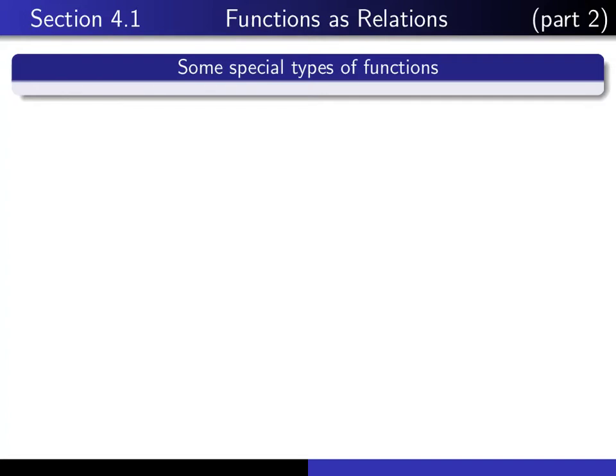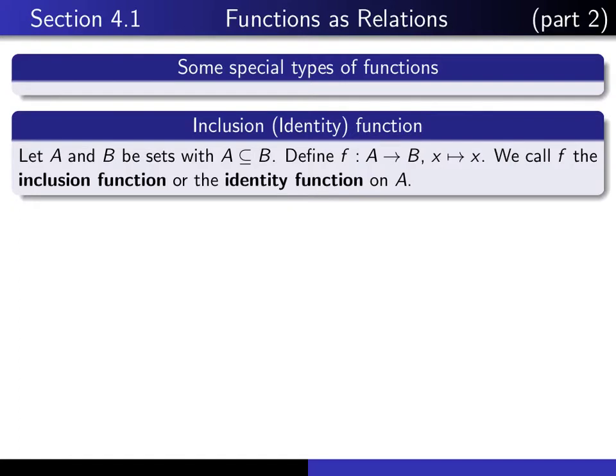This is part 2 in our series of lectures on section 4.1, and in this lecture we're going to talk about some special types of functions. The first special function we're going to talk about is known as the inclusion function. It's also known as the identity function.